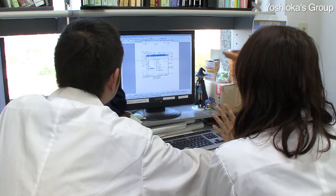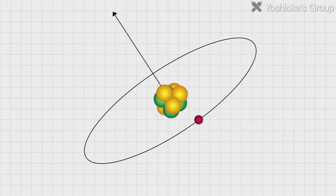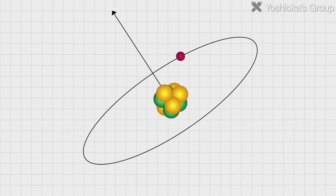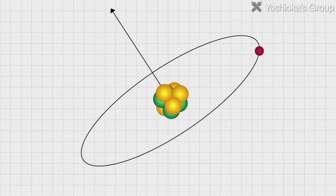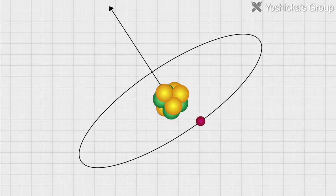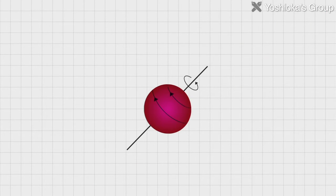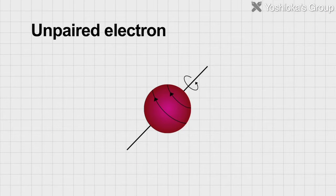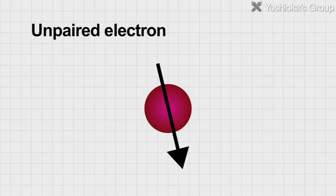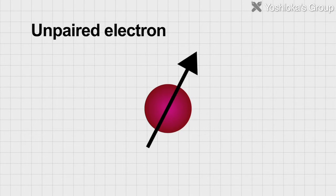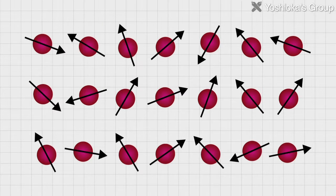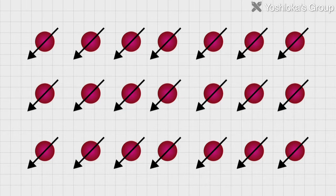When scientists investigated the origin of how magnets attract and repel each other, they arrived at the spin magnetic moment of electrons. Such individual electrons are called unpaired electrons and they act like tiny magnets. However, the magnetic properties of a single molecule are extremely weak. Therefore, technology is needed to align individual molecules.